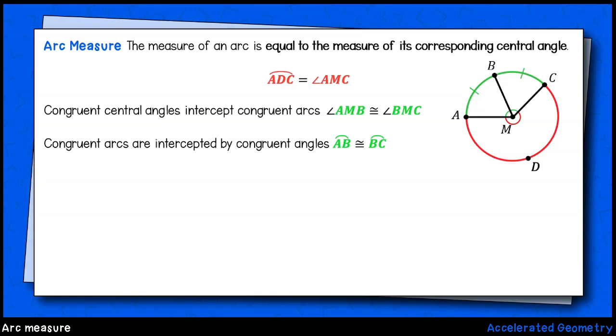We have several ways of describing the arc intercepted by a central or an inscribed angle. We can describe it using a measure, such as degrees, or by using a length, which is a fraction of the circle's circumference. For now, let's keep our focus on finding an arc's measure.